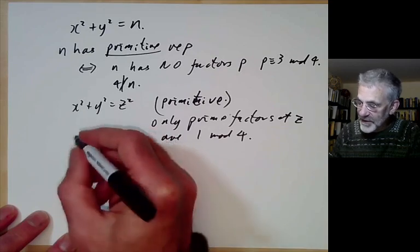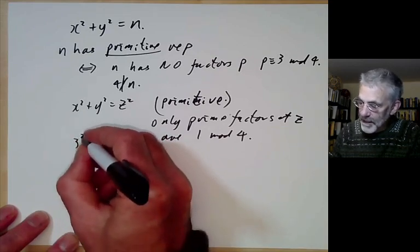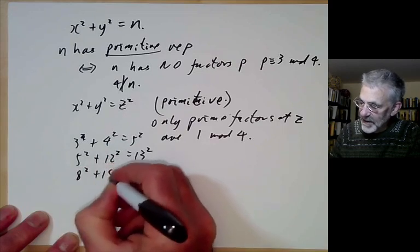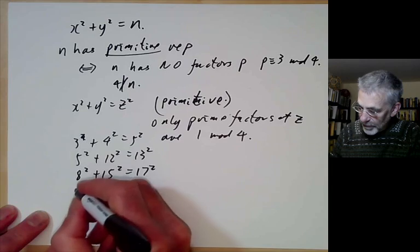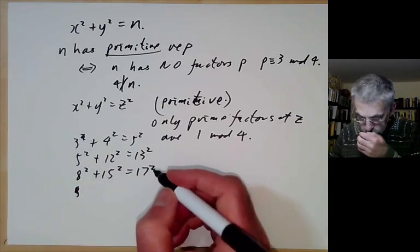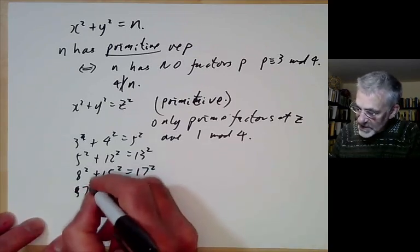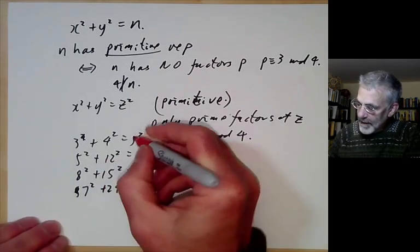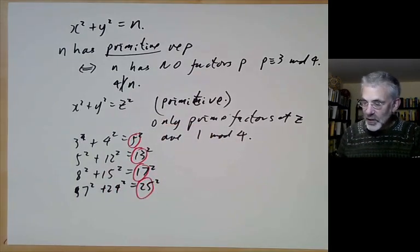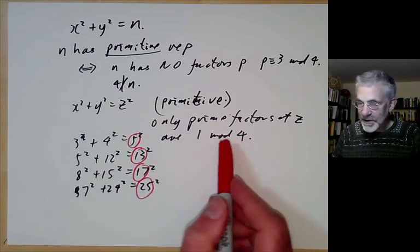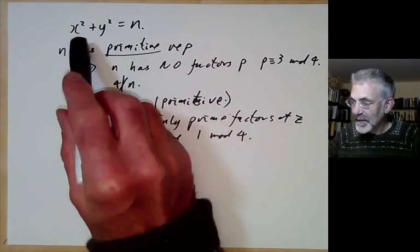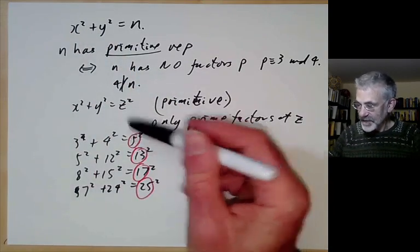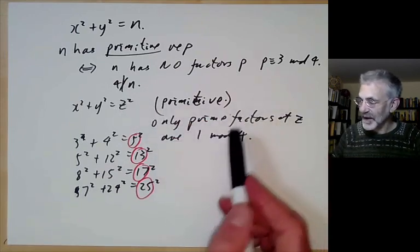Looking at the first few solutions: 3 squared plus 4 squared equals 5 squared; 5 squared plus 12 squared equals 13 squared; 8 squared plus 15 squared equals 17 squared; 7 squared plus 24 squared equals 25 squared. Looking at the numbers on the right, you'll see that these are all products of primes of the form 1 modulo 4. Our theory of the binary quadratic form x squared plus y squared shows this is exactly the condition for z to appear as the hypotenuse.